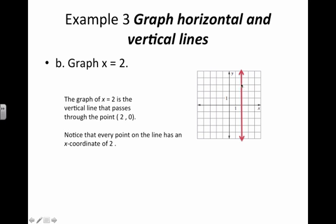Notice that every point on the line x equals 2 has an x-coordinate of 2 — for example, 2, 1; 2, 2; 2, 3; 2, negative 1; 2, negative 2. Every point on this line has an x value of 2, which is why it's called x equals 2.